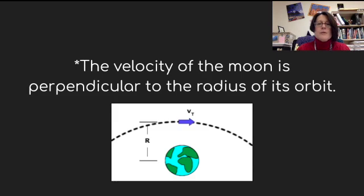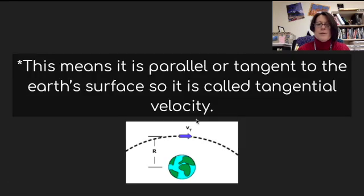This is due to the attraction between the earth and the moon. The velocity of the moon is perpendicular to the radius of its orbit. Here is the radius of its orbit. This is its tangential velocity that is perpendicular. This means that it is parallel or tangent to the earth's surface, so it is called tangential velocity.